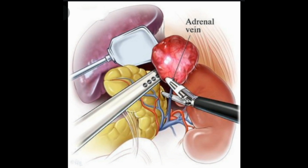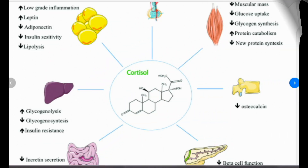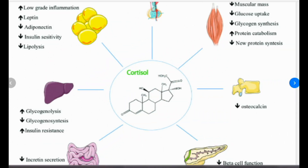The National Institute of Diabetes and Digestive and Kidney Diseases (NIDDK) and other components of the National Institutes of Health (NIH) conduct and support research into many diseases and conditions. Clinical trials are part of clinical research and are at the heart of all medical advances. They look at new ways to prevent, detect, or treat disease, and also examine other aspects of care such as improving quality of life for people with chronic illnesses.